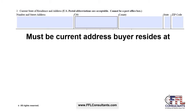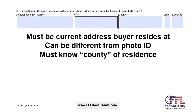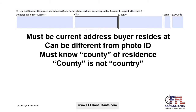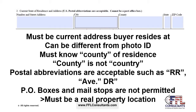Box 2 asks the transferee for their current state of residence and address — this must be the current address where the customer resides and where the gun will be stored. It can be different from the photo ID being presented. Your customer must know the county of residence. Beware that county is not country — customers frequently put 'USA' for country instead of their county. Postal abbreviations are acceptable such as RR for rural route, AVE for avenue, or DR for drive. PO boxes and mail stops are never permitted; the address must be a real property location.